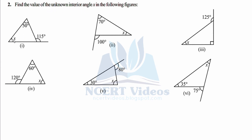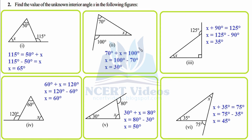Question two: find the value of the unknown interior angle X in the following figures. In this case we have to find interior angle X. Since we know the exterior angle theorem, we can solve easily. The exterior angle of a triangle is always equal to the sum of its opposite interior angles. Here 115° equals 50° plus X.